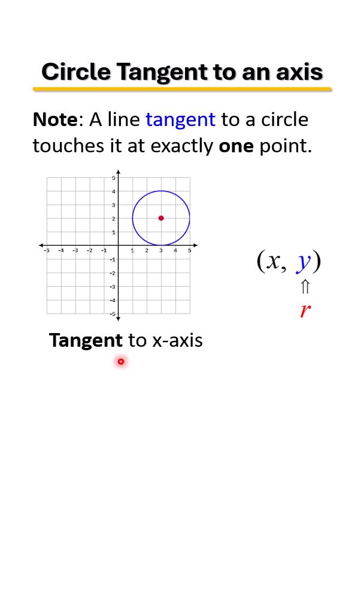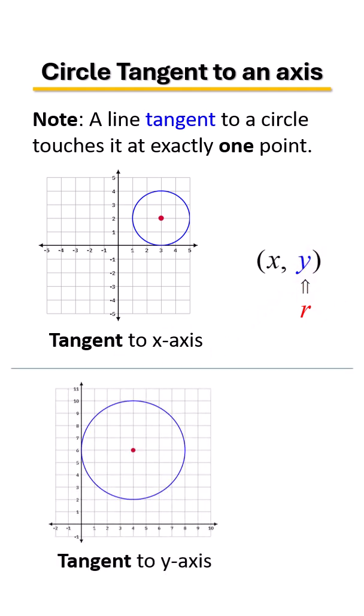Anytime it's tangent to x, it's your y-value, that's your radius. And the opposite, if it's tangent to y, meaning it touches the y-axis at one point, then that point from where it touched to the center, that's your radius. So your x-value then would be your radius.